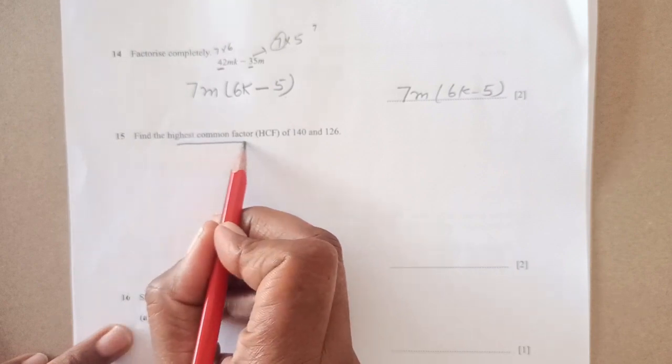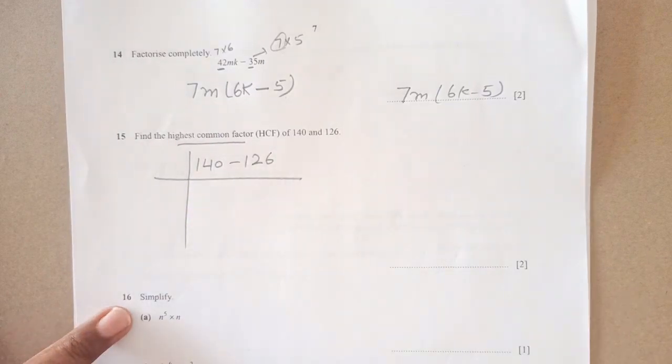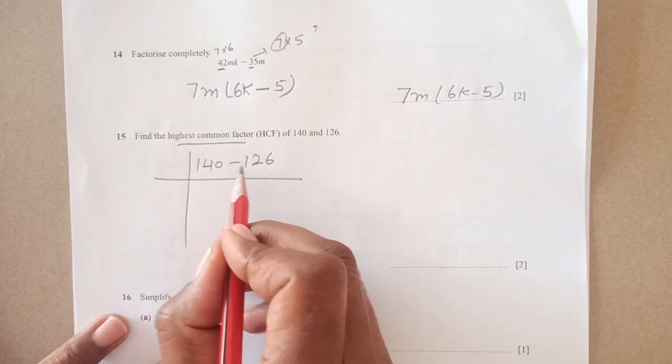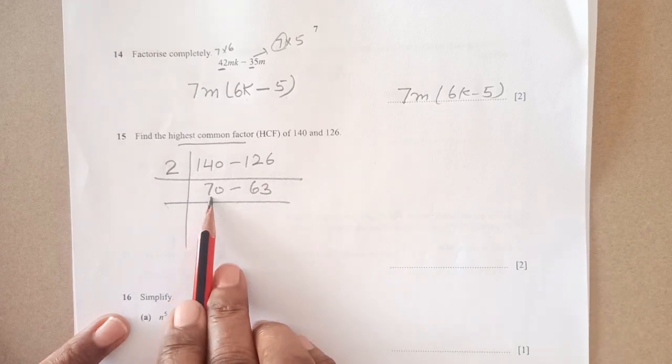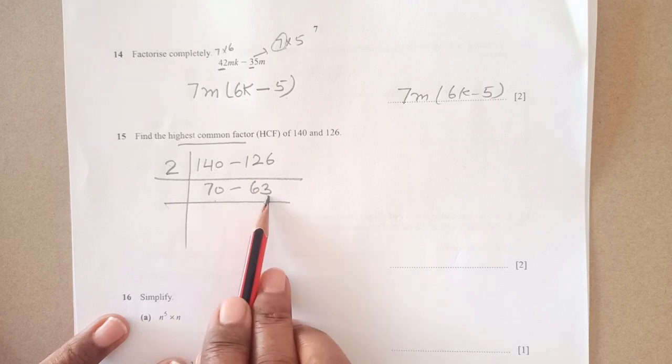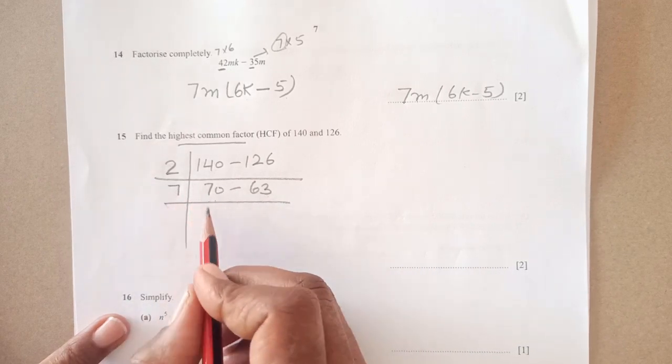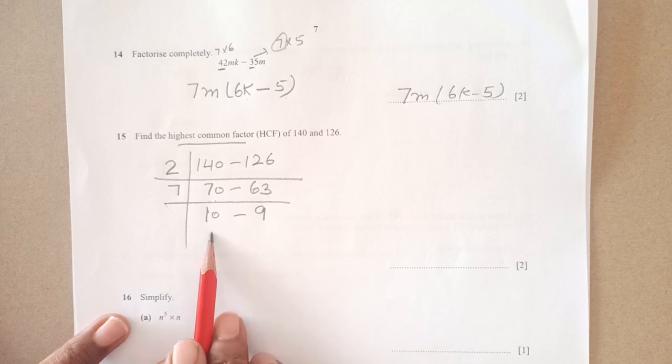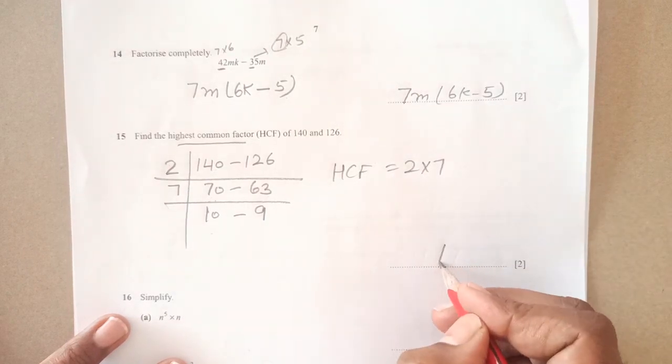Now find HCF of 140 and 126. The easiest way to find HCF is the division method. Take a prime number that divides both of them. Both are even, both divisible by 2, so we get 70 and 63. Now this is even, this is odd, so not divisible by 2. This one is divisible by 7, so 10 and 9. There is no number that can divide both 10 and 9 together. So our HCF is 2 times 7, which is 14.